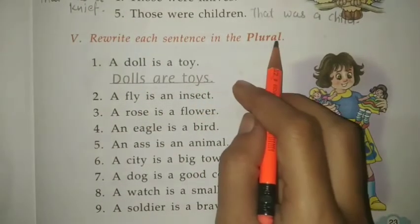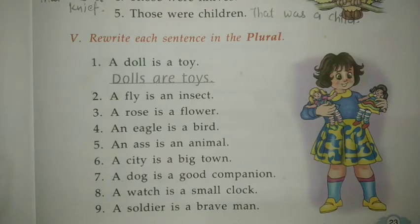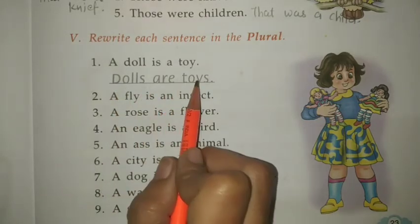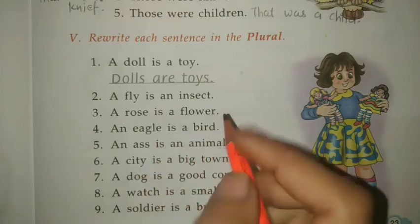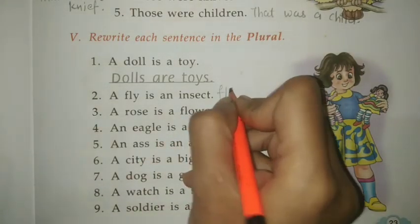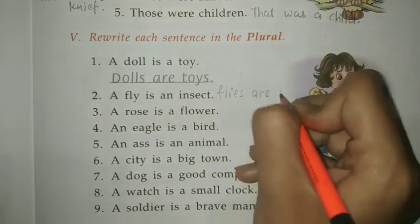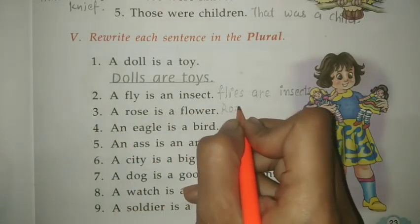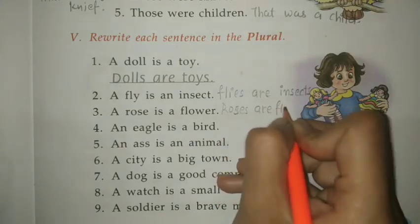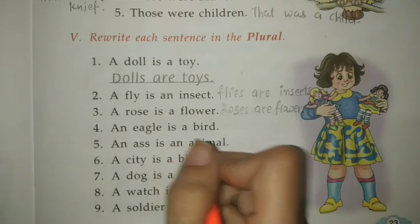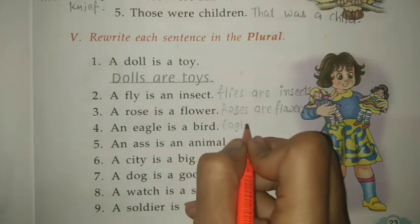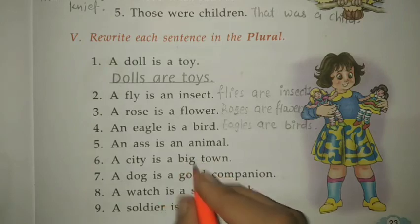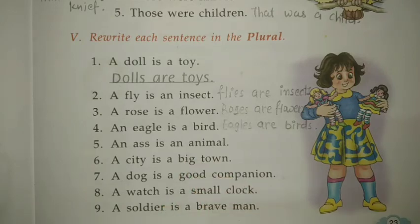Exercise 5: Rewrite each sentence in the plural form. 'A doll is a toy' → 'Dolls are toys.' 'A fly is an insect' → 'Flies are insects.' 'A rose is a flower' → 'Roses are flowers.'